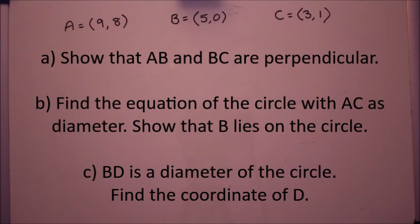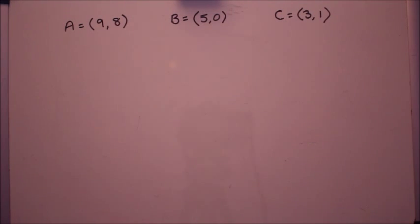OK, here's the question so do pause and get a copy of that. First of all, again, back to the straight line work, we're showing that AB and BC are perpendicular. So you need to get those gradients and show that they times to give minus 1.